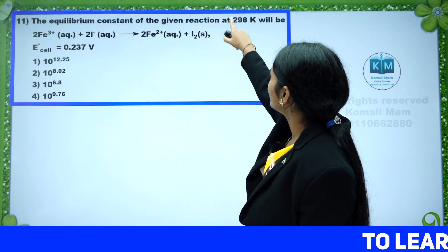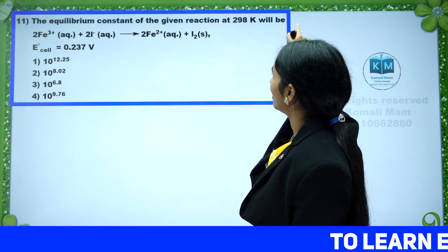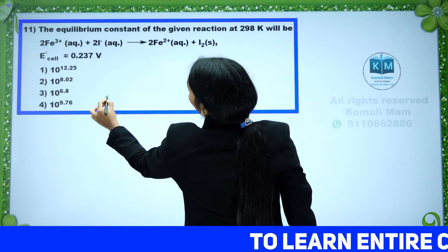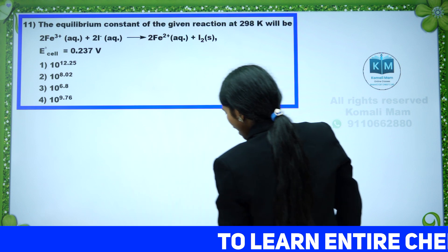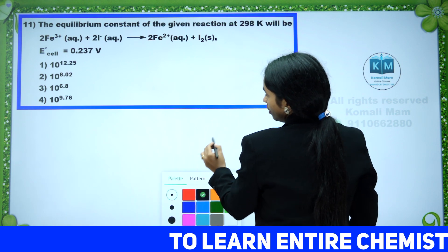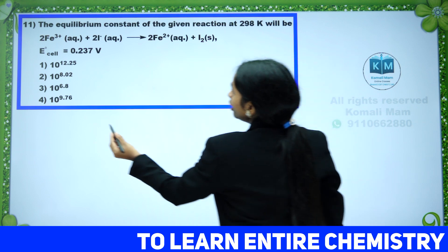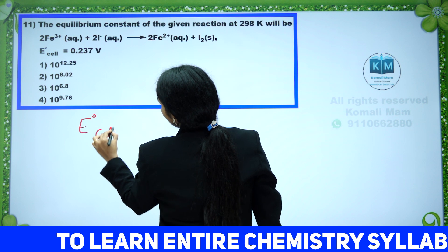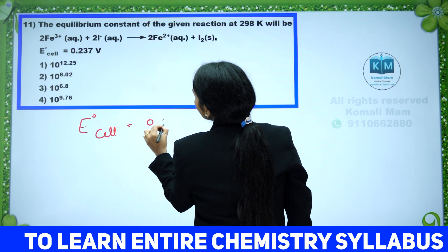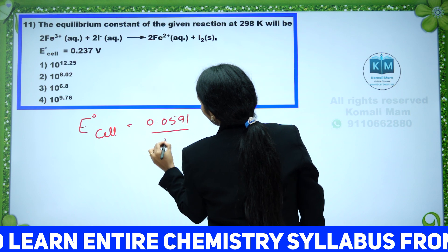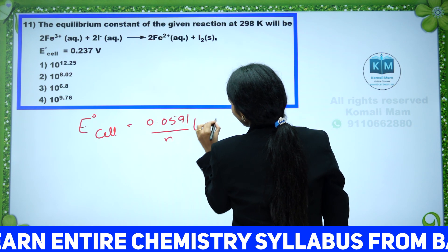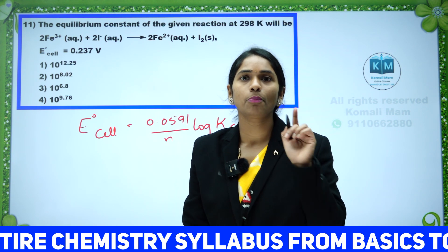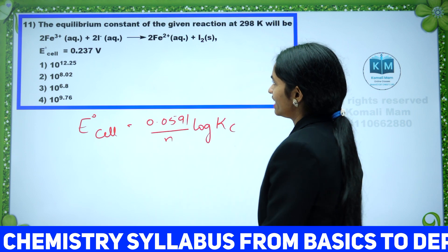The equilibrium constant of the given reaction — they are asking us equilibrium constant and they have given us E° values. The formula is: E°cell = 0.0591 / N × log KC. What is the formula? E°cell = 0.0591 / N × log KC.